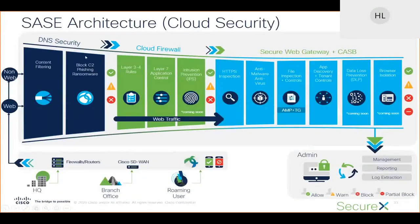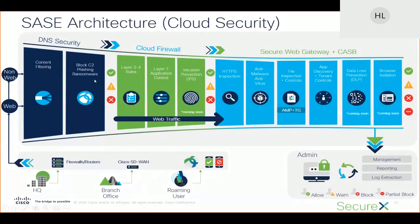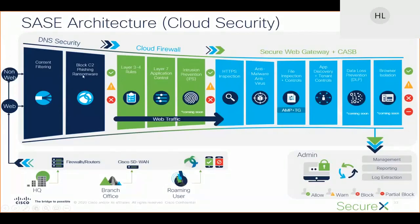Once traffic is sent to the SASE engine, we have multiple layers of protection. We believe we should not rely on a single solution — we need to rely on multiple technologies, because that's what hackers leverage as well. Number one is DNS security, because 99% of traffic today leverages the DNS protocol to reach the internet for first connectivity — which is where we can enforce broad but very effective protections for content filtering, blocking malware, and ransomware.